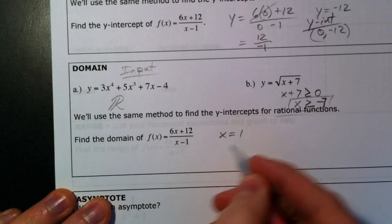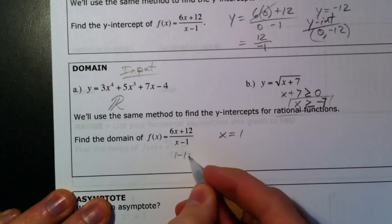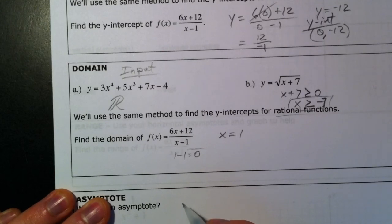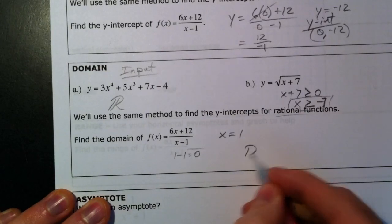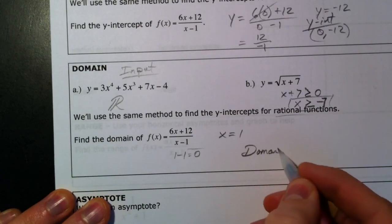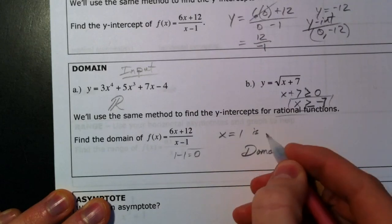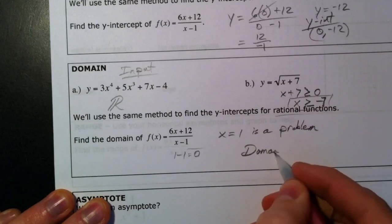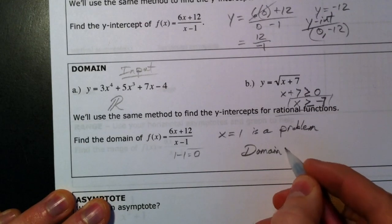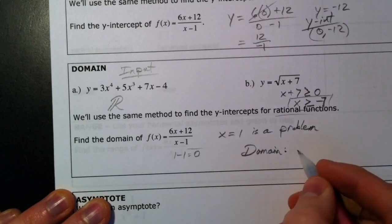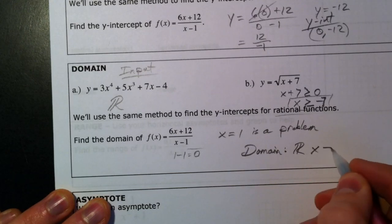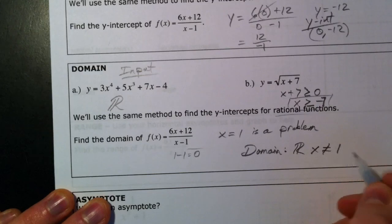And so the problem with this one is if x is 1, you get 1 minus 1 equals 0, and you can't divide by 0. And so our domain, x equals 1, is a problem. And so our domain is going to be all real numbers, x can't equal 1.